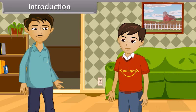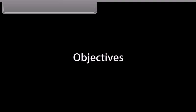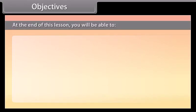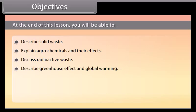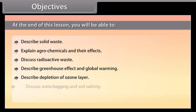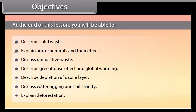In this lesson, you will learn about environmental issues. At the end of this lesson, you'll be able to: describe solid waste, explain agrochemicals and their effects, discuss radioactive waste, describe greenhouse effect and global warming, describe depletion of ozone layer, discuss waterlogging and soil salinity, and explain deforestation.